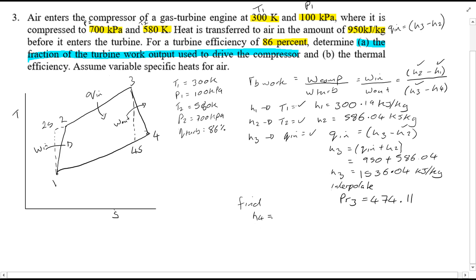Once you've found H3, we're then able to find H4S, and once we've found H4S, we can then find the H4A value. Now in order to find H4S, we know that the pressure ratio is equal to P2 over P1. And since both of these values have been given, PR4 over PR3 is equal to P4 over P3. So then simply rearranging this, we can find the value of PR4, which is equal to P4 over P3 times PR3 of course.